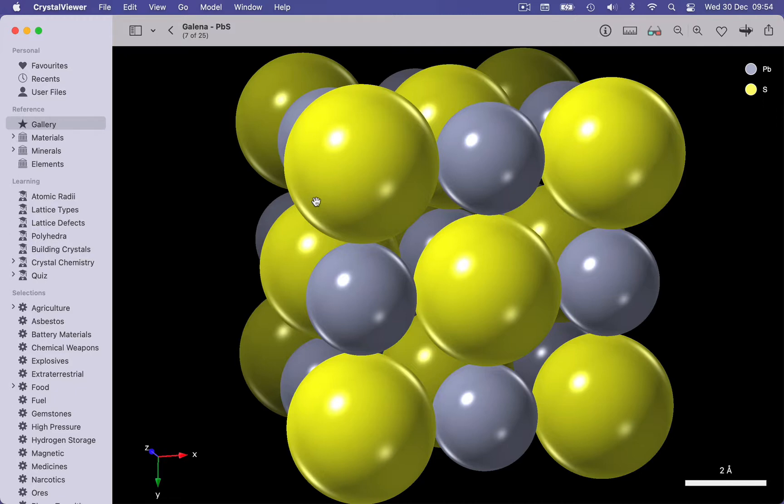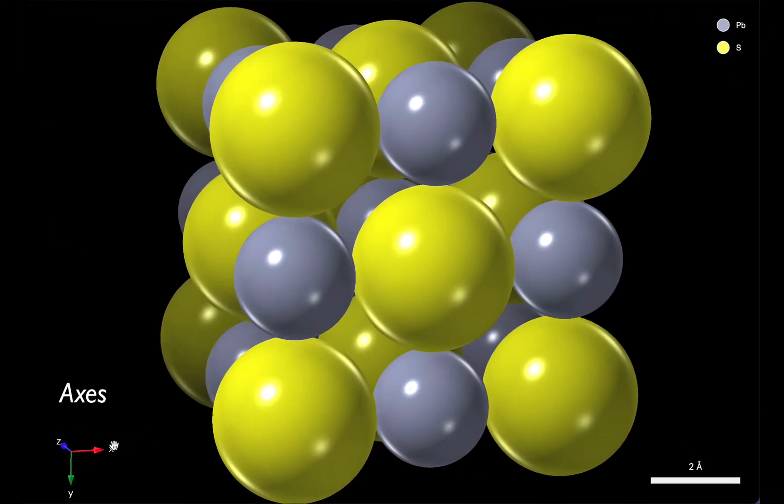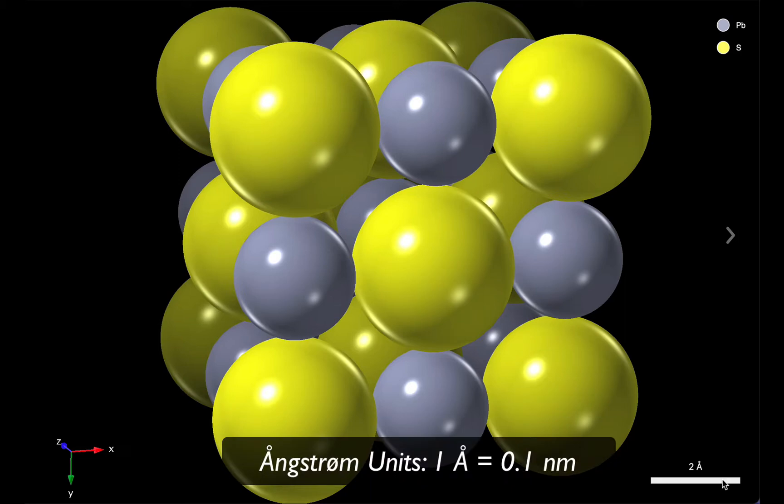Before we start to interact with the structure itself, let's look at the other items in the viewer. In the bottom left-hand corner, we have a set of axes, and these help us orient ourselves relative to the crystal structure. In the bottom right-hand corner, we have a scale bar, and this is marked in angstrom units, where one angstrom is 10 to the minus 10 metres, that's 0.1 nanometres. Angstroms are the standard units in crystallography because most atoms have radii close to one angstrom in size.